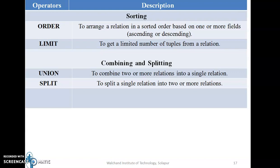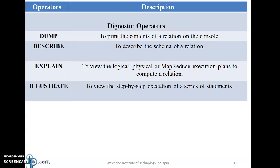The combining and splitting category consists of union and split. Union combines two or more relations into a single relation, and split divides a single relation into two or more relations based on a condition. The diagnostic operators category consists of four types: dump, which prints the contents of a relation on the console; describe, which describes the schema of a relation; explain, used to view the logical, physical, or MapReduce execution plans; and illustrate, used to view step-by-step execution of a series of statements.